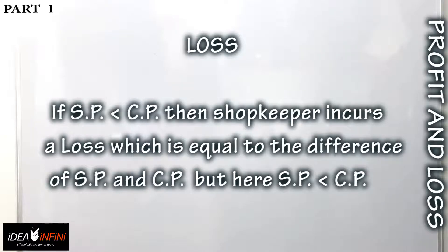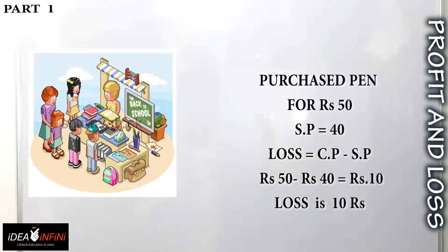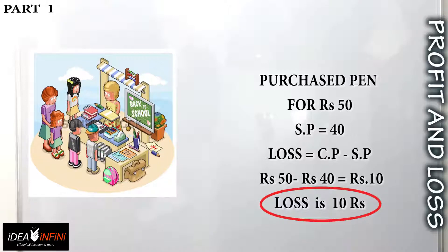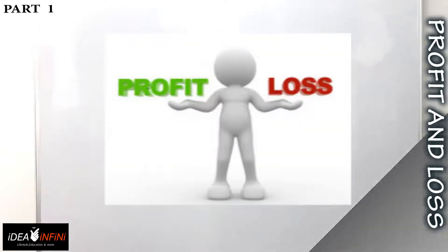The next term is loss. If the selling price is less than the cost price, the shopkeeper incurs a loss equal to the difference of CP and SP. The formula for loss is CP minus SP. For example, suppose the shopkeeper purchased the pen for rupees 50 but sells it for rupees 40. He is incurring a loss of CP minus SP, that is 50 minus 40, which equals rupees 10.